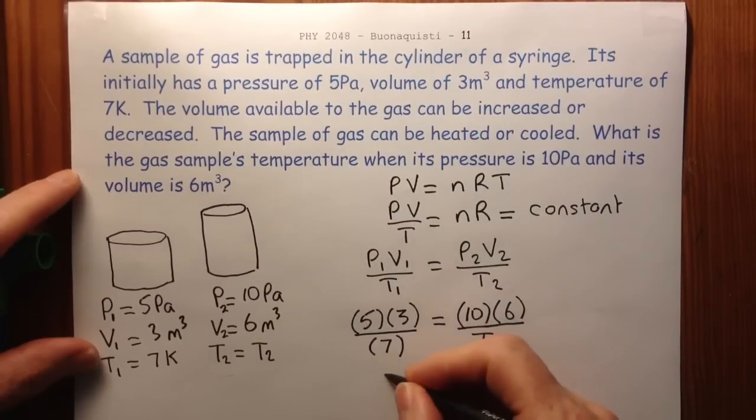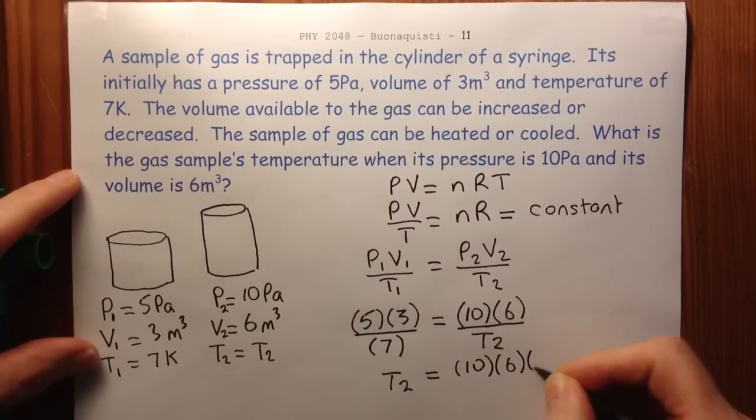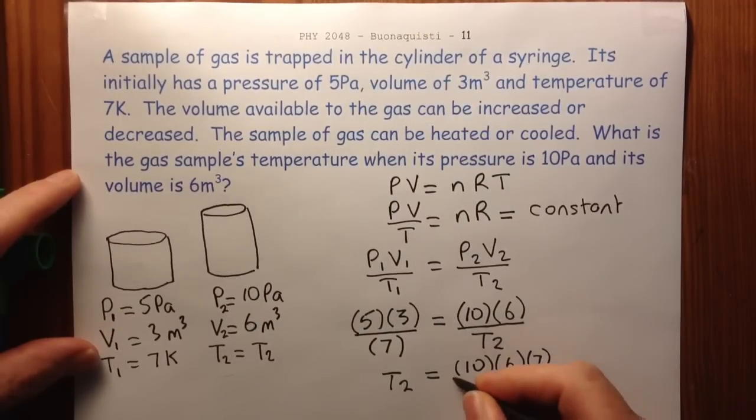I like to write out this next step. People sometimes skip it, and I think that's where they tend to make just slips that give them the wrong answer. So this would be 10 times 6 times 7 over 5 times 3.